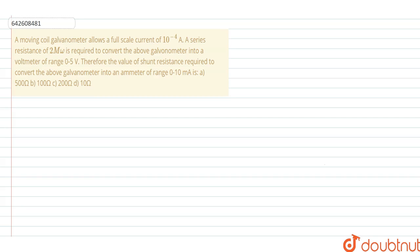based on moving charges and magnetism. Question is: a moving coil galvanometer allows full scale current of 10 to the power minus 4 ampere. A series resistance of 10 mega ohm is required to convert the above galvanometer into